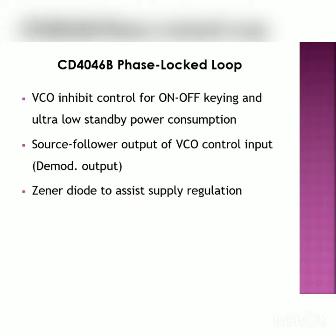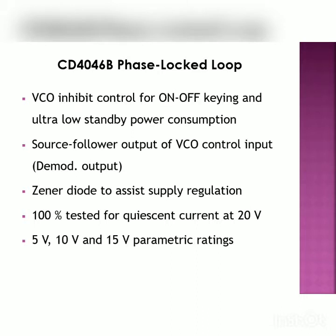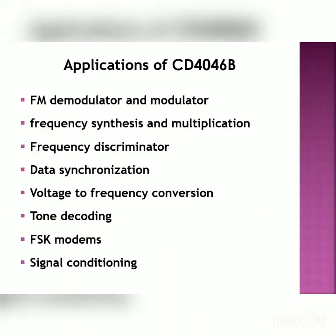An internal Zener diode is available to assist supply regulation. The IC is 100% tested for efficient current at 20 volt supply voltage, and three parametric ratings are provided when operated at 5 volts, 10 volts, and 15 volts.